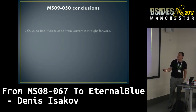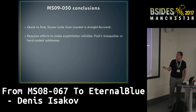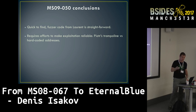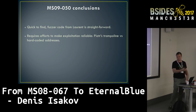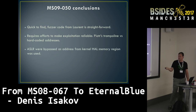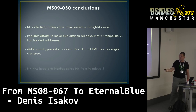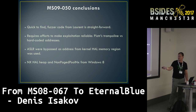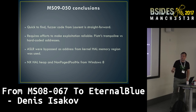Starting from this, there are some good improvements. Some conclusions on MS09-050: quick to find, quite straightforward, but requires effort to make it reliable. Hard-coded addresses are probably not the best option; however, if you have a particular target and need to get there right now, you can spend a bit of time debugging, finding those addresses, and finding the proper address in the kernel heap to get it done. Regarding ASLR: the kernel pool memory region was not subject to ASLR in Windows Server 2008. To address this in Windows 8 and later, we have NX kernel heap and non-paged pool NX, so you cannot execute code there.